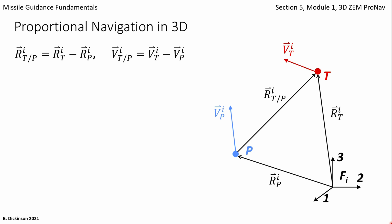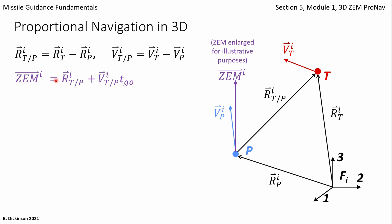Now recall the concept of zero effort miss. At the current instant as shown in this diagram, if the pursuer and target do not maneuver all the way to tf — the final time, or time to go equals zero — then the miss distance that results is also called the zero effort miss vector. So zero effort miss is the present relative distance plus the relative velocity times time to go. Now recall from the previous module that zero effort miss perpendicular to the line of sight direction is what's input into the PRONAV law. So we need to get at that zero effort miss normal to the line of sight direction.